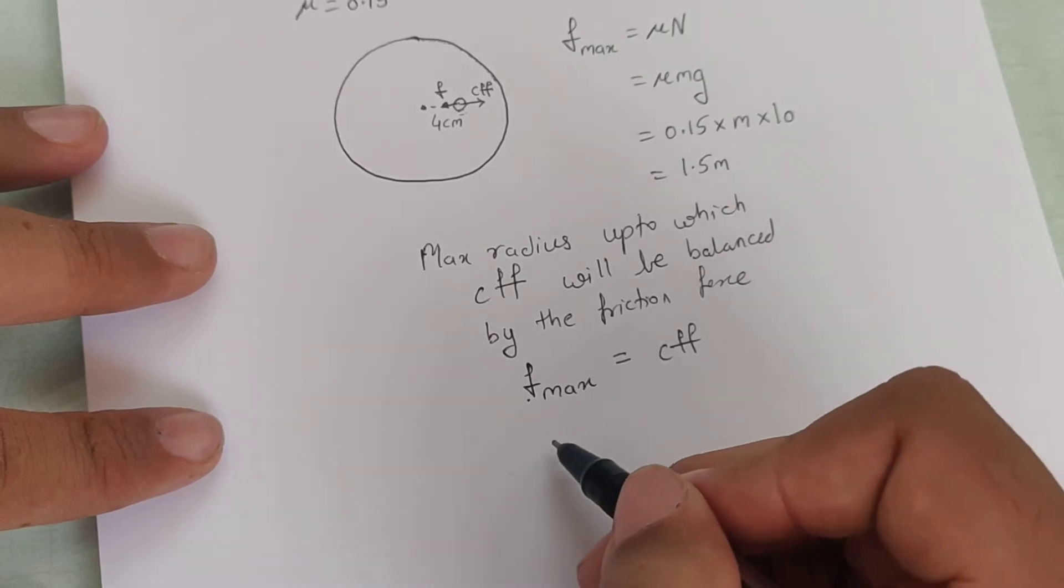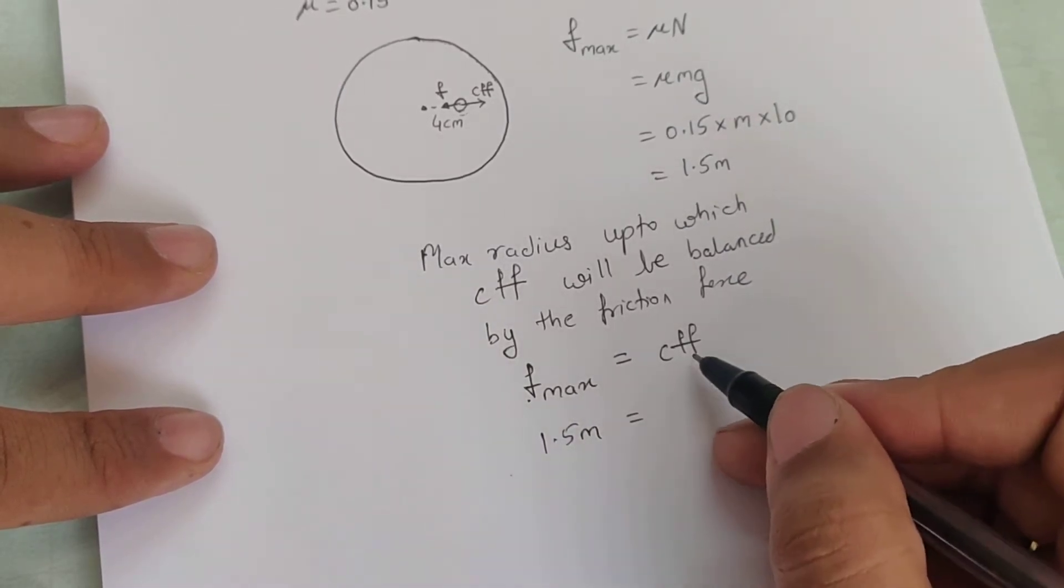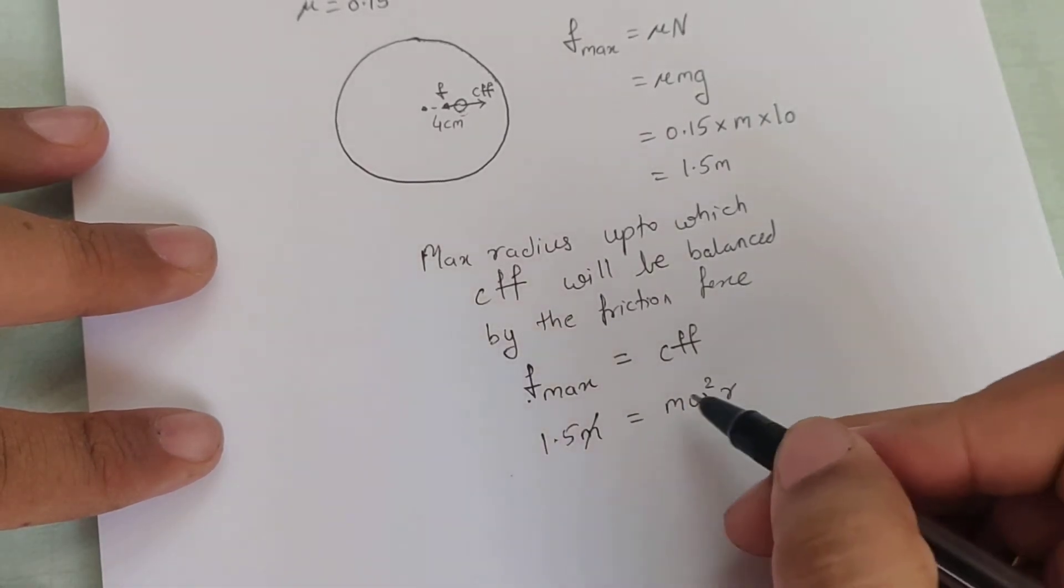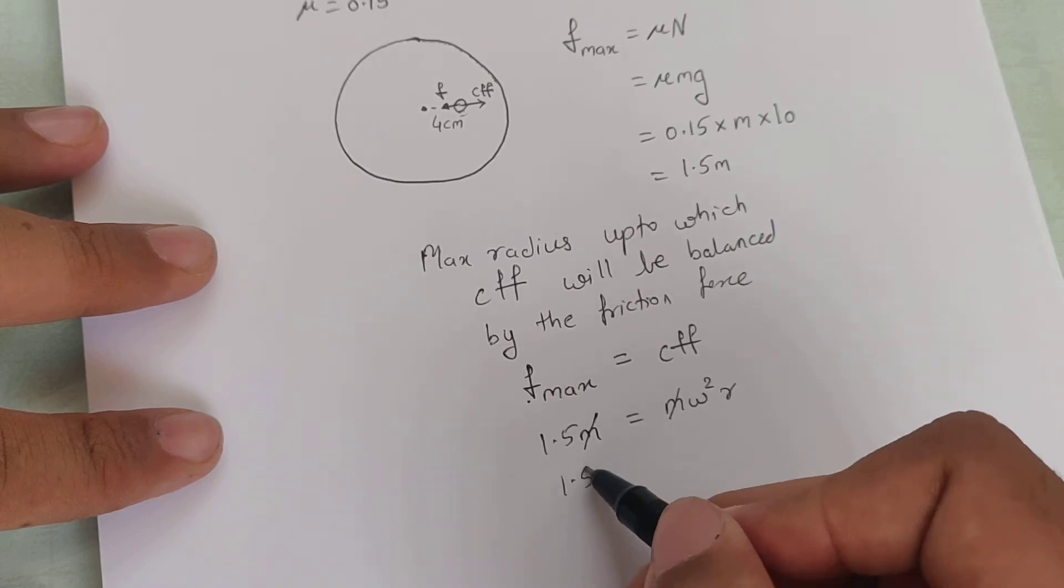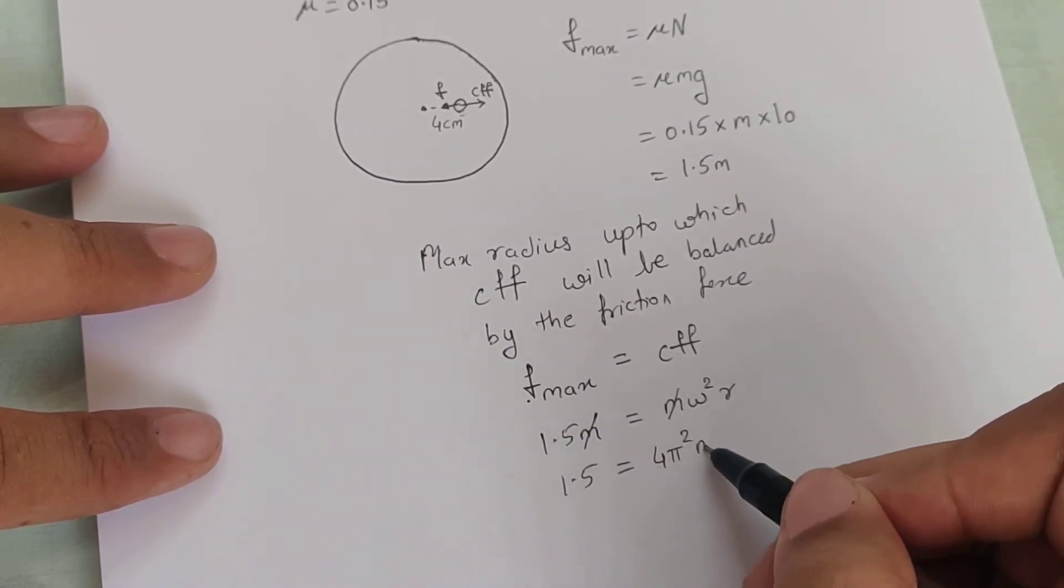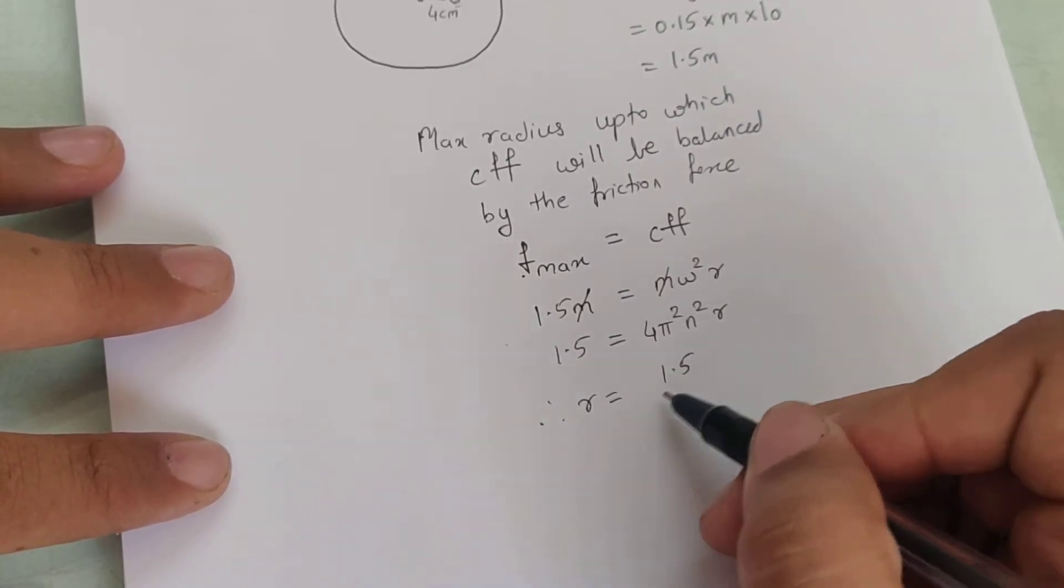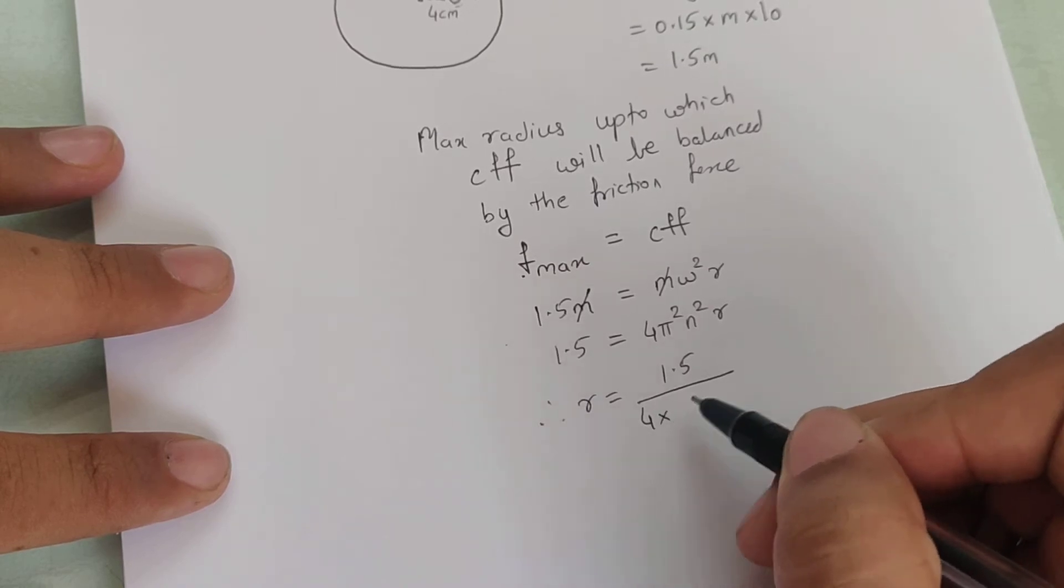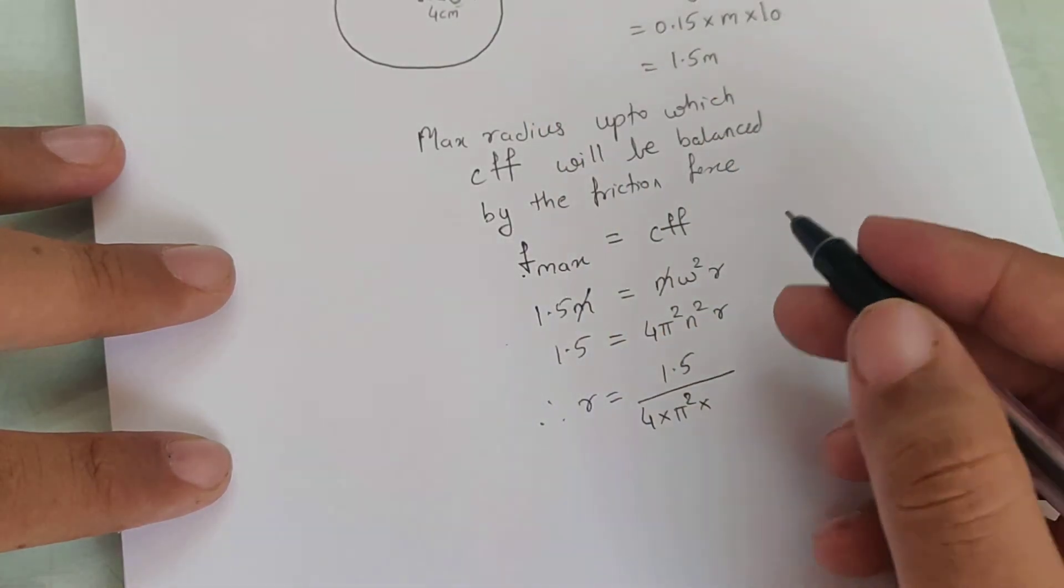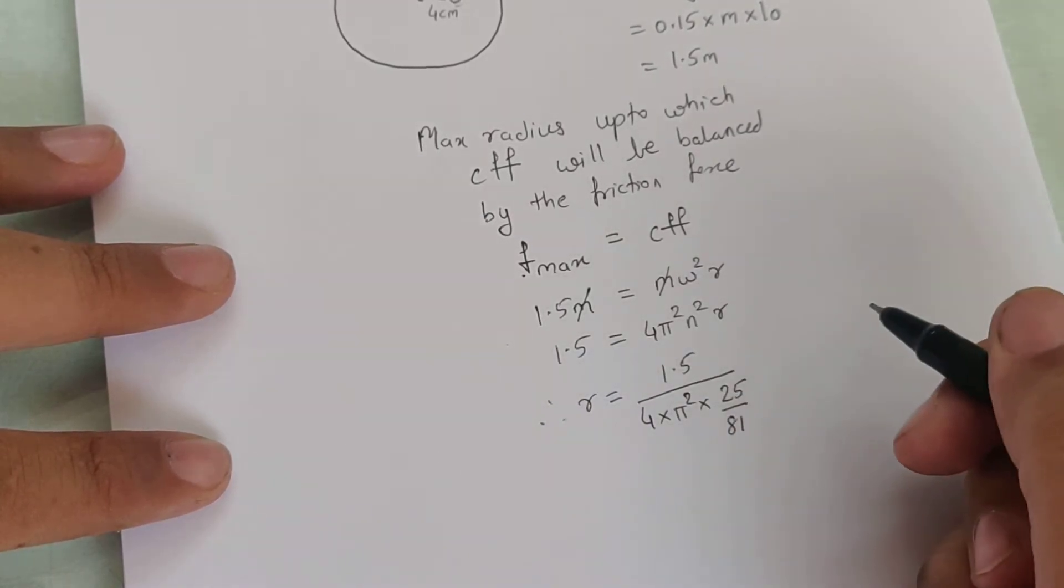Now f max we got it as 1.5m and centrifugal force is m omega square r. This m gets cancelled so 1.5 is equal to omega which can be written as 4 pi square n square r. So therefore r is 1.5 upon 4 into pi square into n. If you remember n is 5 by 9, so that is 25 by 81 because we did the square.